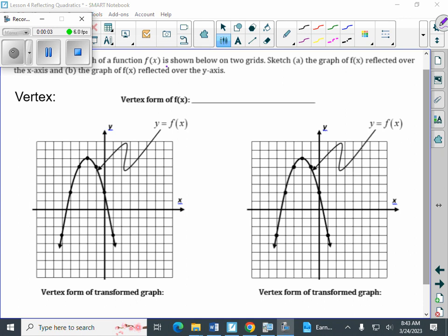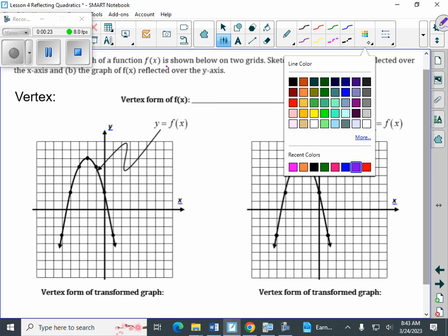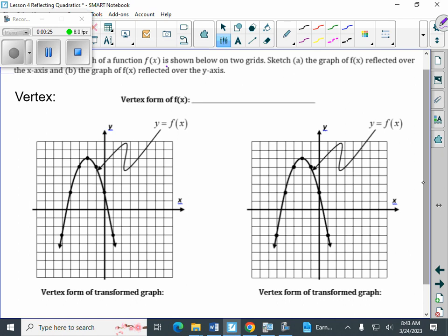The graph of a function f(x) is shown below on two grids. We're going to sketch a to the left here. We're going to sketch that graph reflected over the x-axis. And then the graph to the right we're going to reflect over the y-axis. So let's start with a little bit of information about our given graph, because it's the same picture in both of those grids right there.